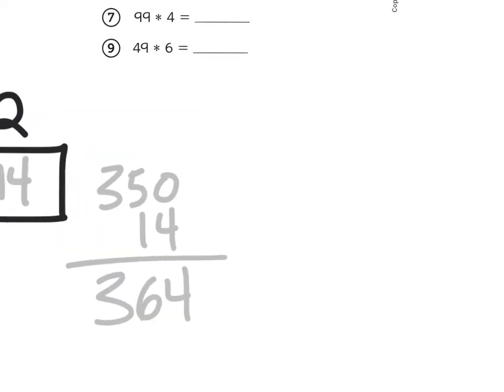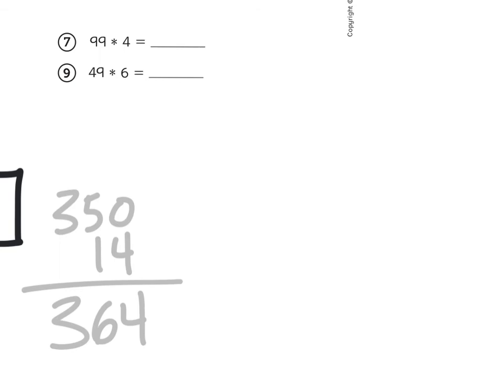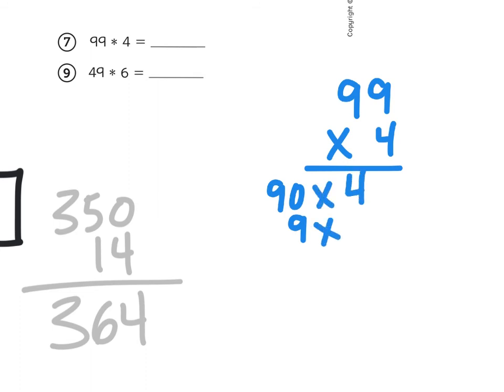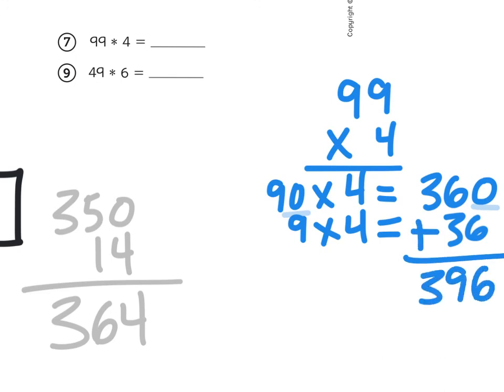Now, if I try problem number 7, 99 times 4, using the partial products method, I'm going to write my algorithm vertically. That's just a fancy way of saying I'm going to make my problem go up and down. So, then I can write the parts. 99 is 90 and 9, I'm going to multiply both of those by 4. I like these double numbers because it saves me an extra step. Because if I know what 9 times 4 is, which is 36, I know what 9 tens, or 90 times 4 is. It's going to be 360, or 36 tens. And then I just add those two amounts together. 360 plus 36 gives me a total of 396.